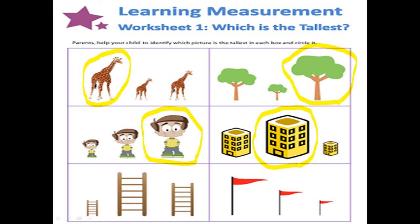Next one is a set of ladders. Which ladder is the tallest? Point it out, please. This one is the tallest ladder. The last set is a set of poles. Which could be the tallest pole? Good job, KGs. I know you pointed all the correct answers today. That is the review on the size tallest.